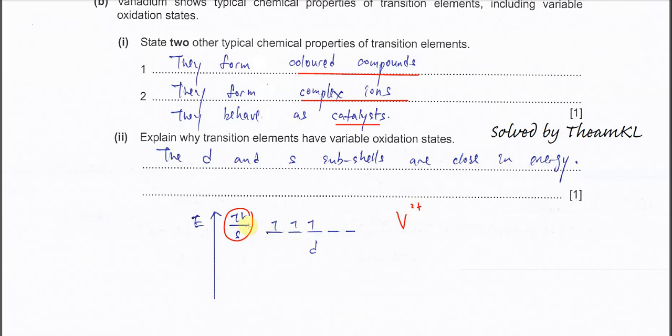Because the energy level of this s and d subshell is close. Once electrons remove from d subshell, then the other electrons in the d subshell or the orbitals now can easily remove. So when these electrons remove, it can form V³⁺. When this one removes, it will form V⁴⁺ and this one removes V⁵⁺.